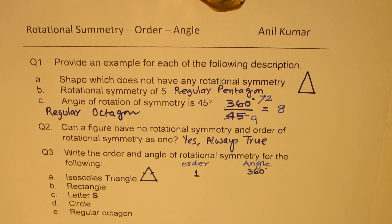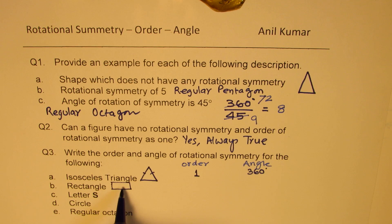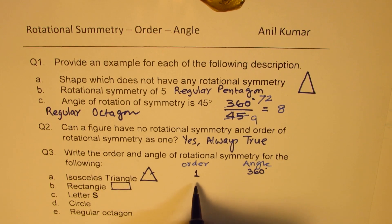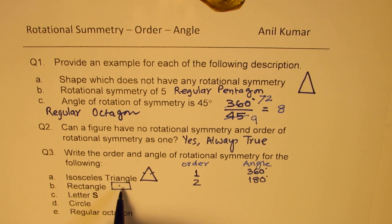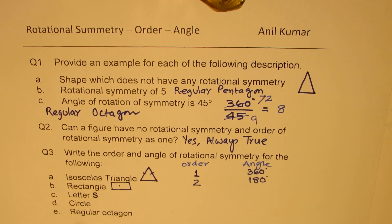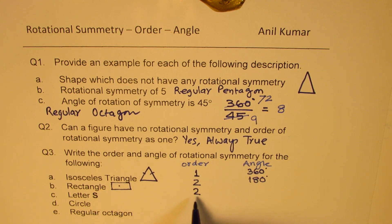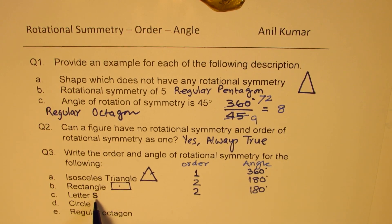Rectangle: we're talking about a general rectangle, not a square. It will match itself twice in one full turn, so the angle will be half of 360, which is 180 degrees. The letter S will also match itself when rotated about its center once before a full turn. So it has an order of 2, and the angle is 180 degrees.